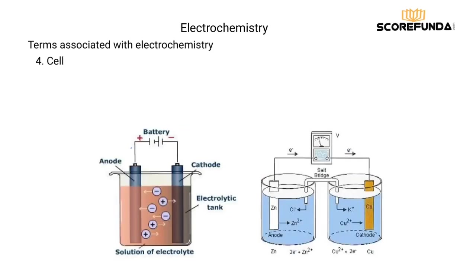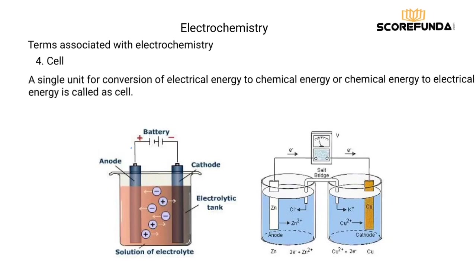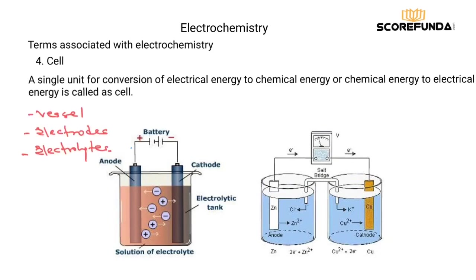The fourth term is cell. A single unit for the conversion of electrical energy to chemical energy, or chemical energy to electrical energy, is called a cell. Basically, a vessel with electrodes and electrolytes capable of converting either chemical energy into electrical energy or electrical energy into chemical energy is termed a cell.